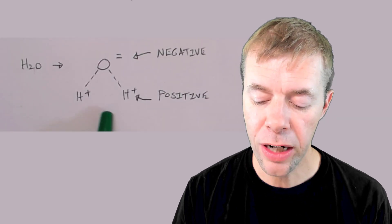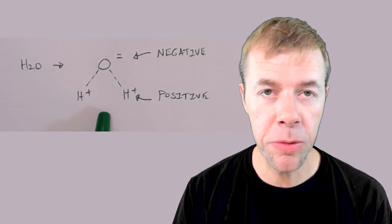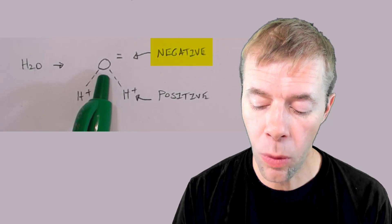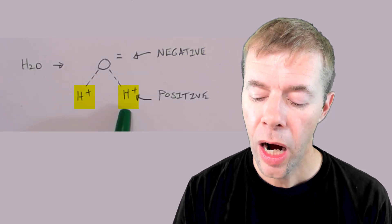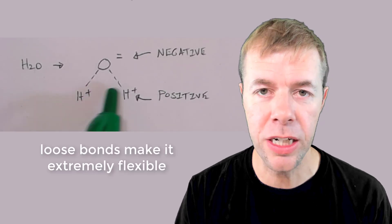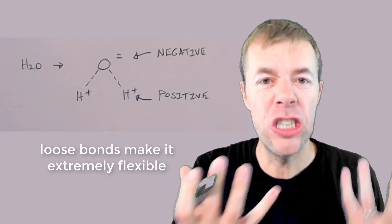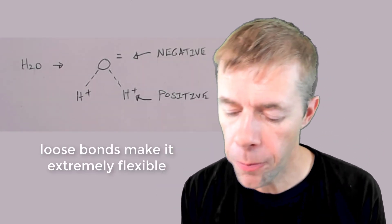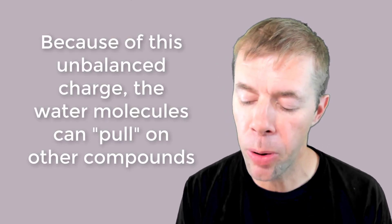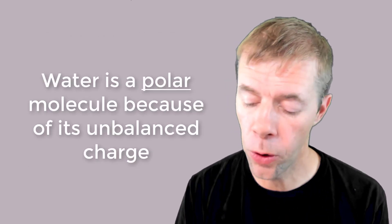So why is water so good at this? This is what water looks like on an extremely small scale — at least idealized. It's got a negative oxygen on one side and two hydrogens that are H-pluses on the other side. It's got these very loose bonds. It can move around and change. It's extremely flexible. And because of this unbalanced charge, the water molecules can pull on other compounds. This unbalanced charge is also what makes it a polar molecule.